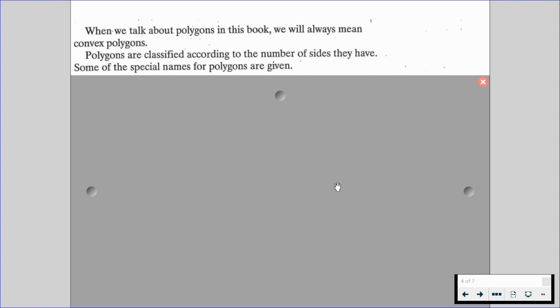When we talk about polygons in this book, in this year, we will always mean convex polygons. We're specifically going to be referring to convex polygons. And polygons are classified according to the number of sides they have, and some of them have special names.